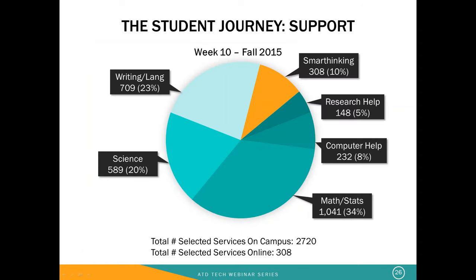Every Wednesday we report on a number of metrics we keep. My team reports on out-of-class support. This is a typical report from about six weeks ago — we tracked students using writing, language arts, science, math/stats, computer help, research help, and Smart Thinking. For that week, we had 2,720 student interactions, 308 through Smart Thinking. Smart Thinking comprises anywhere between 10 and 16 percent of the out-of-class support help we provide students. Those subject areas are 35 in total, available for AA and baccalaureate degree students. We do not limit the amount of help students can get, and we continue to monitor that help and push them into places where they can get even more.